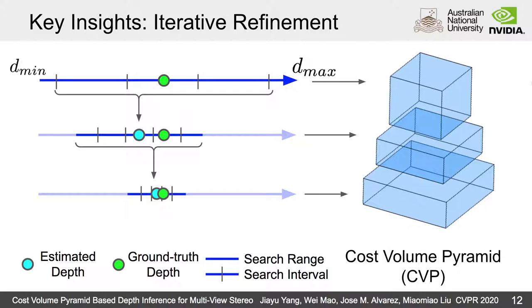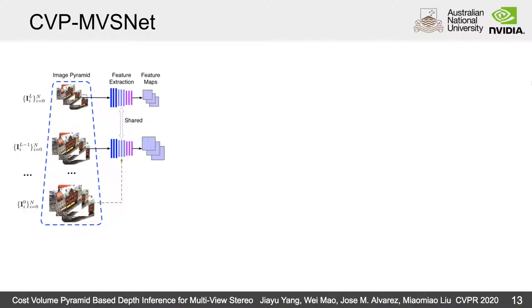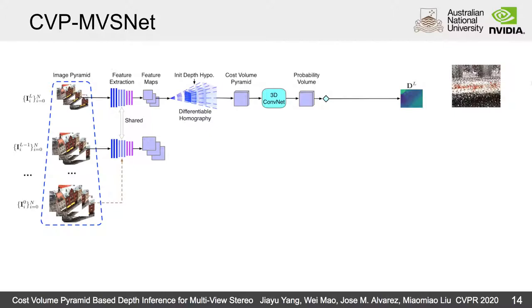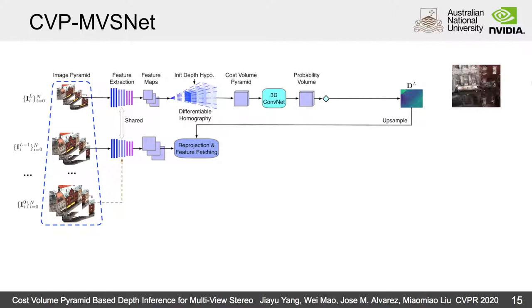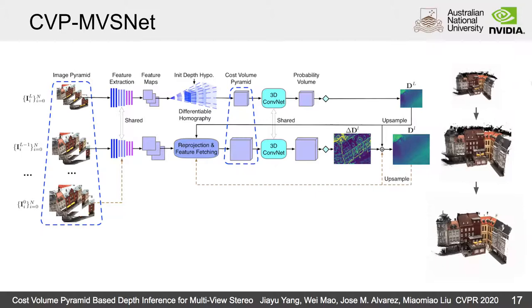Combining all of these, let me introduce the general structure of the coarse volume pyramid-based MVS network, CVPMVSnet. Given a set of input images, we build an image pyramid and use a shared weight feature extraction network to extract feature maps for each level of the pyramid. Then a small coarse volume is built to estimate a coarse depth map. The initial depth map is then upsampled to match the higher resolution image, and we build a partial coarse volume to estimate a refined depth map. The refinement can be performed several times to generate a high quality point cloud.